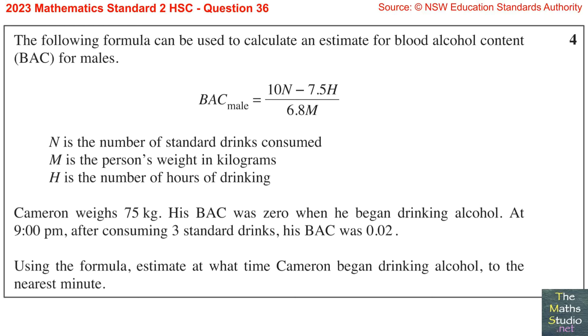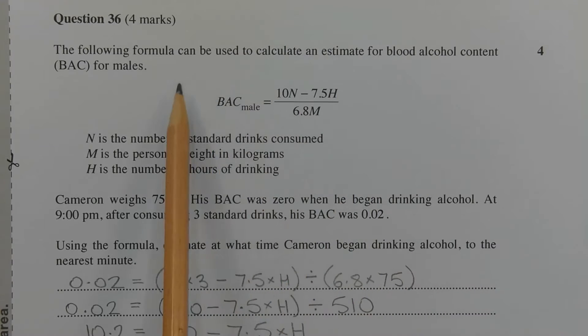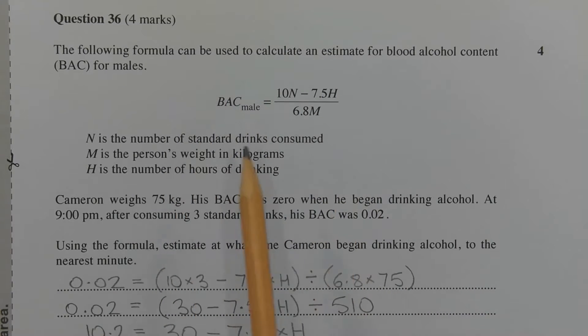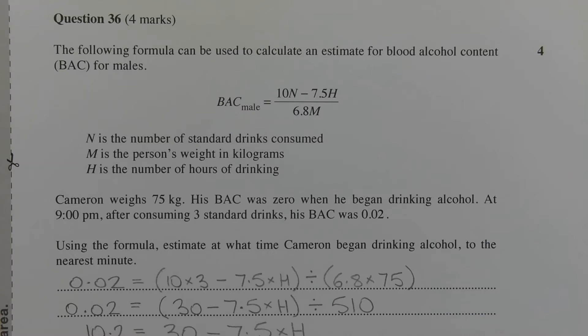The strategy is to rearrange this formula to make H the subject, since H represents the number of hours that Cameron has been drinking. Once we work out the value of H, we can subtract that from 9 p.m. to get the approximate time that Cameron began drinking alcohol.